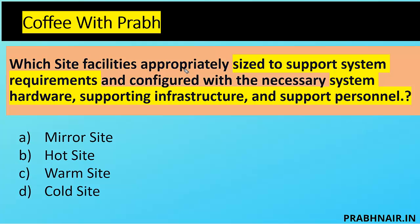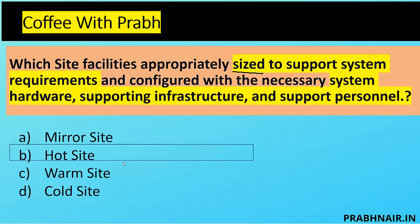Next coffee shot: which site facility is appropriately sized to support system requirements and configured with the necessary system hardware, supporting infrastructure, and people? Mirror site has data, so that's not what's described here. Warm site doesn't have a server — it has HVAC, cabling, and network but no server. Cold site is an empty shell. The only option left is hot site, because a hot site has an alternate site with people, process, technology, and server — we just need to move data and make it operational. The answer is B.